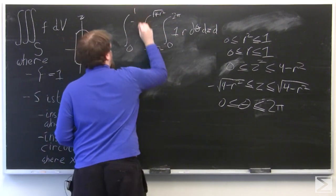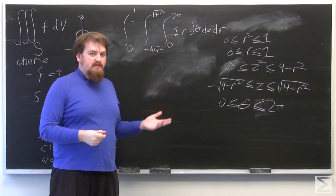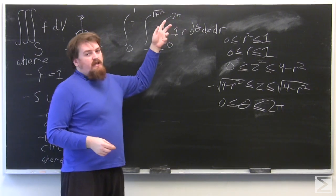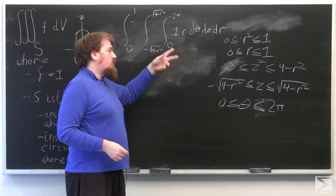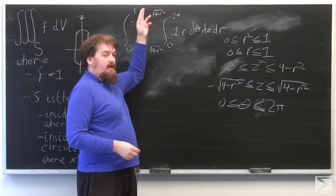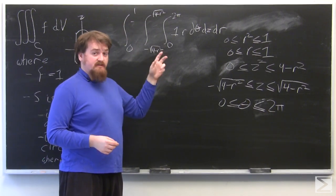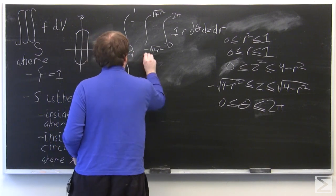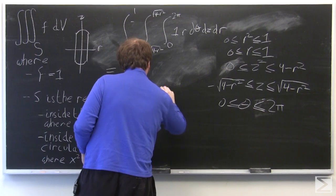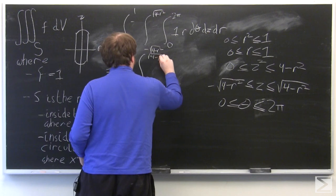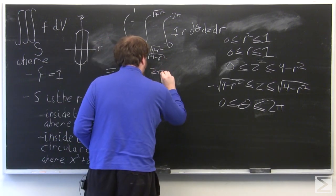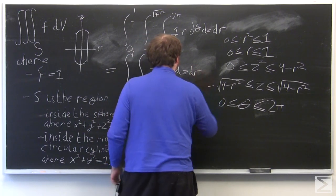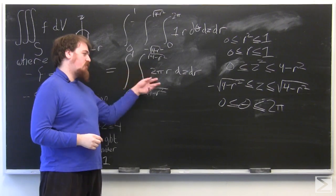Now that we have our triple integral, we evaluate it like any iterated integral. On the inside, the integrand r is a constant with respect to θ, so the theta integral just multiplies the integrand by 2π − 0 = 2π.